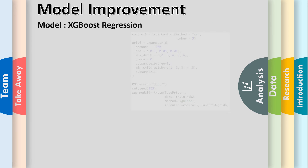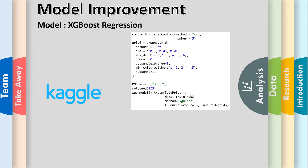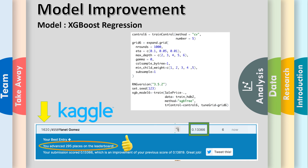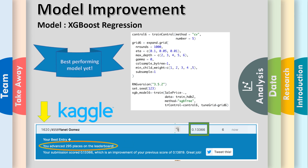After some extensive tuning on the XGBoost regression model, we moved up 295 places on Kaggle, placing us at number 1,620 out of 4,559 entries — our best-performing model yet. Take it away, Shivam.